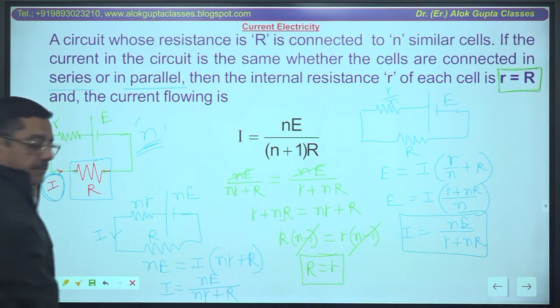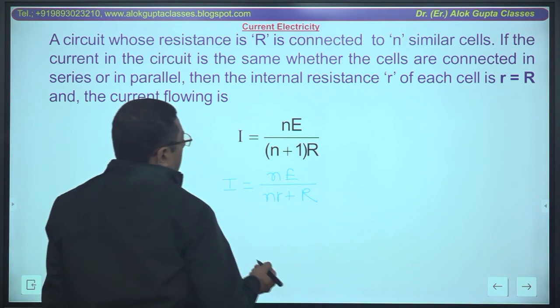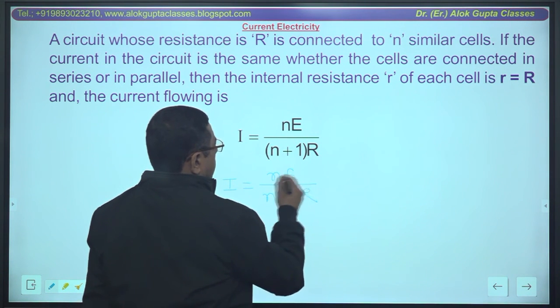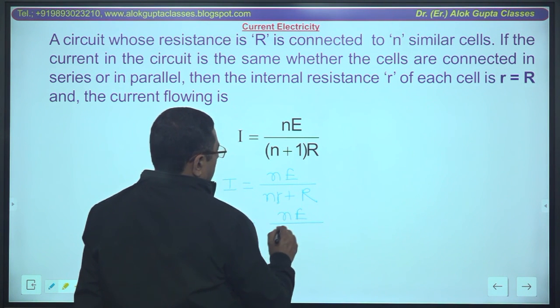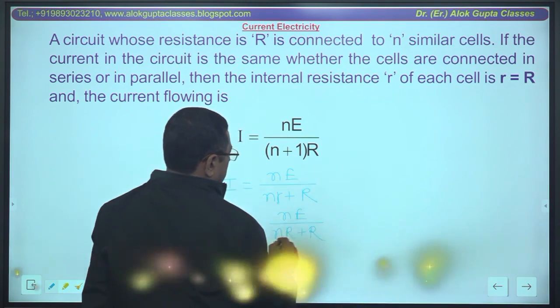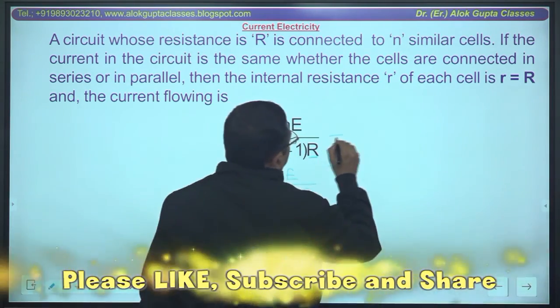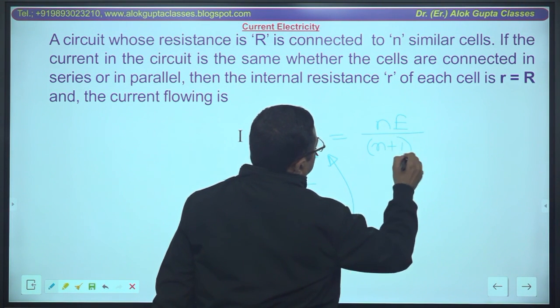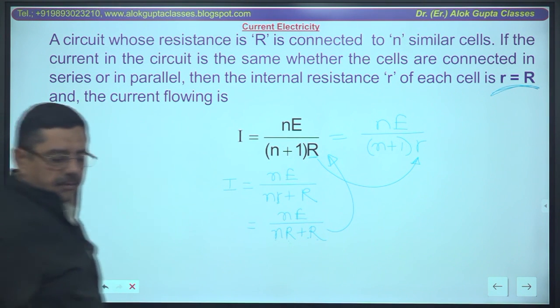This is the condition, now memorize this. Now what is the current flowing? Current flowing is nE upon nr plus R - I took the series one. Now you can do: that equals, R equals r, both are equal. Take R common in the denominator, what is it? It is nE upon R common taken, n plus 1. It can also be written as nE upon (n plus 1) into r. Why put it? Because they are equal.